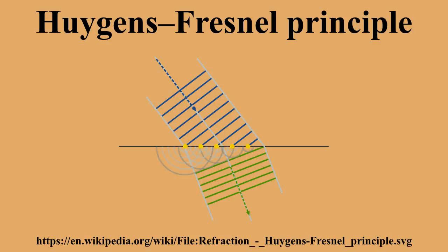Huygens' principle can be seen as a consequence of the homogeneity of space — space is uniform in all locations. Any disturbance created in a sufficiently small region of homogeneous space propagates from the region in all geodesic directions. The waves created by this disturbance in turn create disturbances in other regions, and so on. The superposition of all the waves results in the observed pattern of wave propagation. Homogeneity of space is fundamental to quantum field theory, where the wave function of any object propagates along all available unobstructed paths. When integrated along all possible paths with a phase factor proportional to the action, the interference of the wave functions correctly predicts observable phenomena.